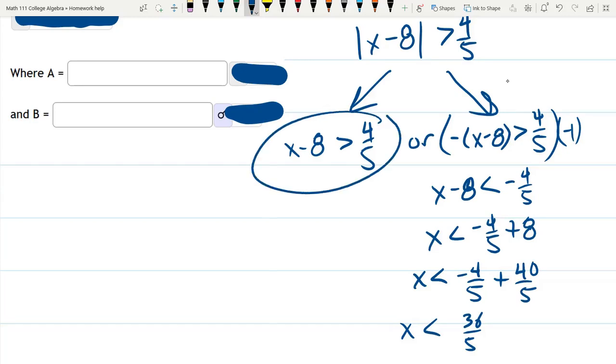And the other side, this one, we'll add. I don't have to multiply by negative 1 here. So we have 4 fifths plus 8 we know is 40 fifths. X is greater than 44 fifths.